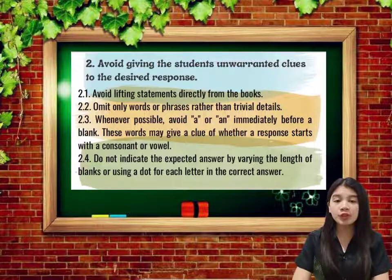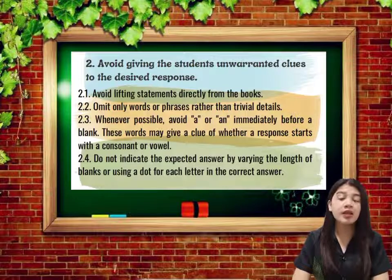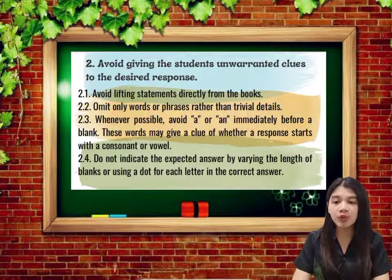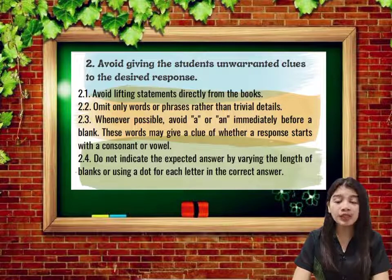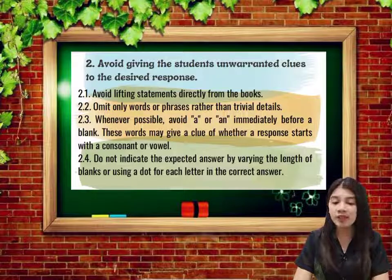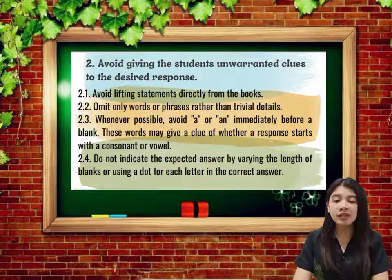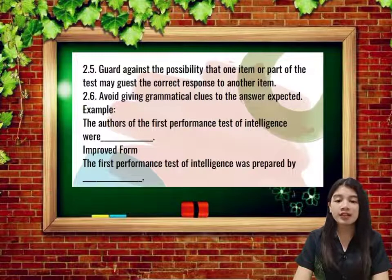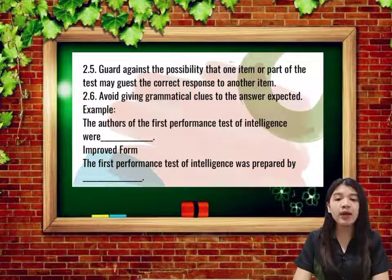Avoid giving students unwarranted clues to the desired response. Avoid lifting statements directly from the books. Omit only words or phrases rather than trivial details. Whenever possible, avoid 'a' or 'an' immediately before a blank, as these words may give a clue whether a response starts with a consonant or a vowel. Do not indicate the expected answer by varying the length of blanks or using a dot for each letter. Guard against the possibility that one item may reveal the correct response to another item. Avoid giving grammatical clues to the expected answers.